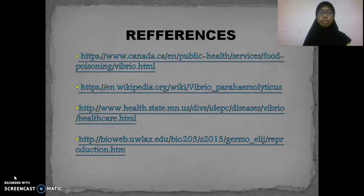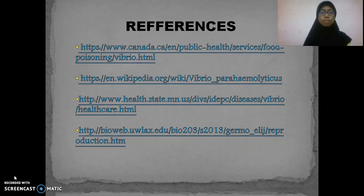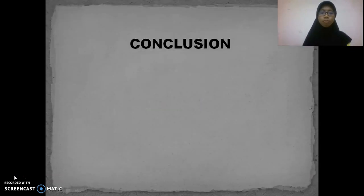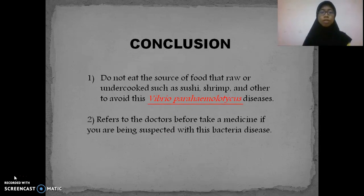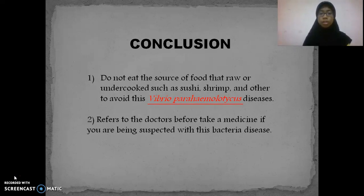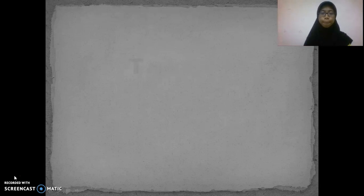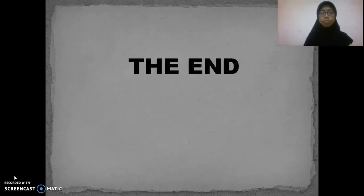These are the references for my research on Vibrio parahaemolyticus. In conclusion, do not eat raw or undercooked food such as sushi, shrimp, and others to avoid Vibrio parahaemolyticus disease. Lastly, refer to a doctor before taking any medicine if you are suspected of having this bacterial disease. That's all from me, thank you.